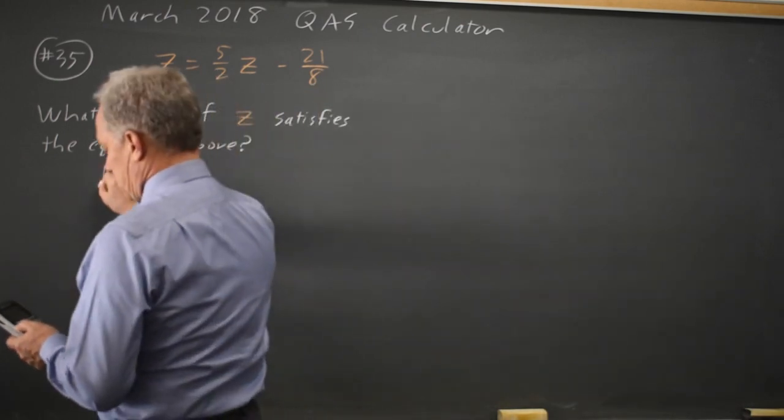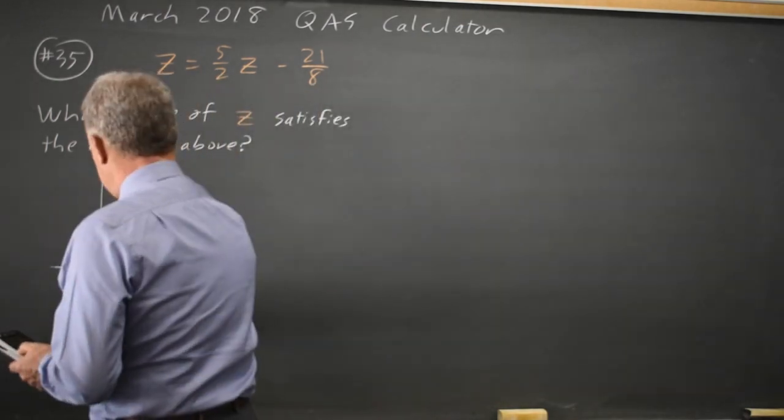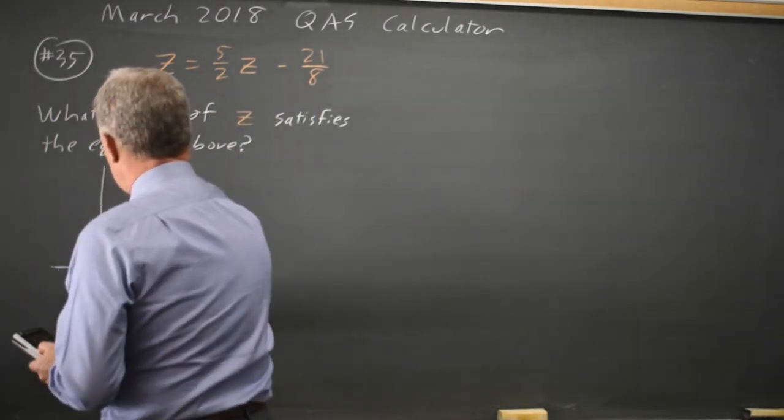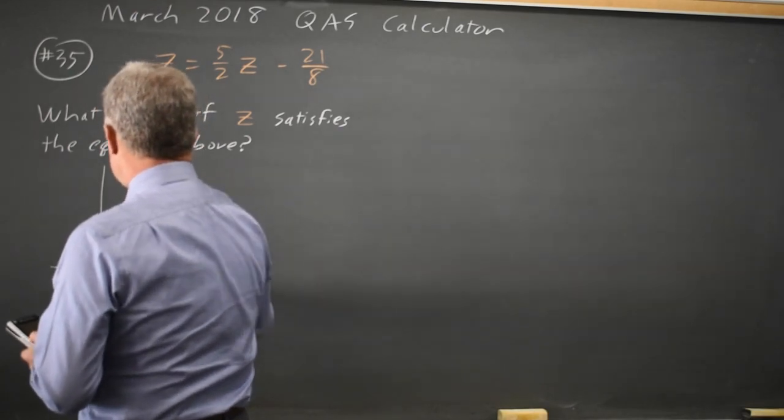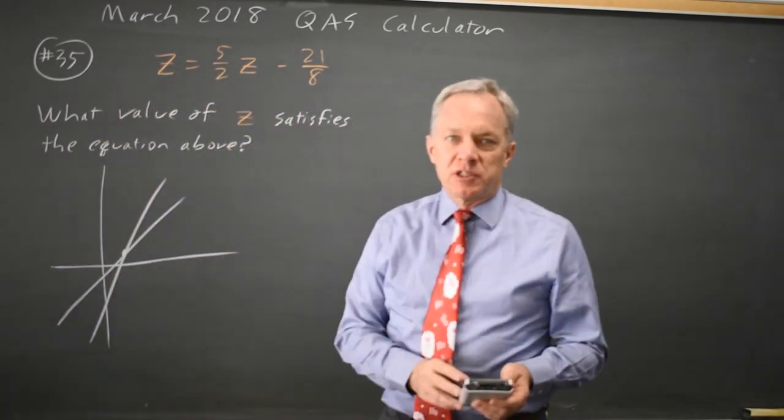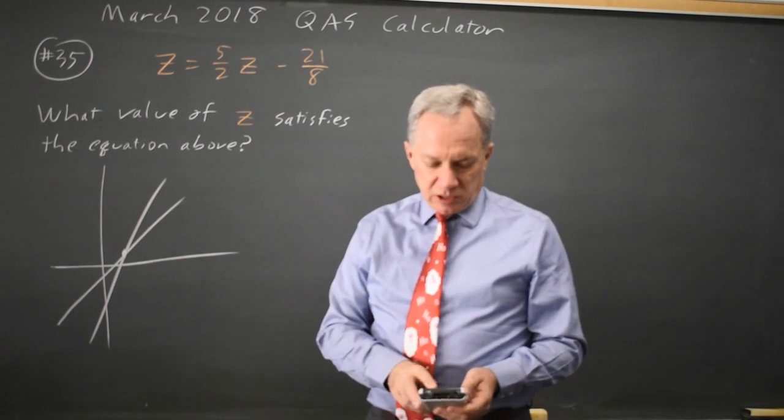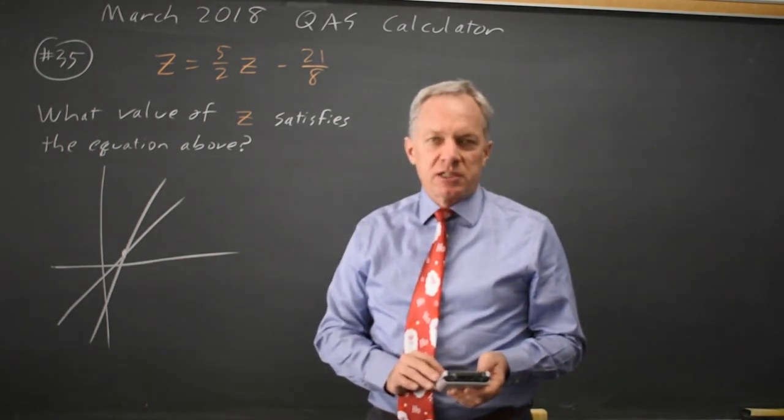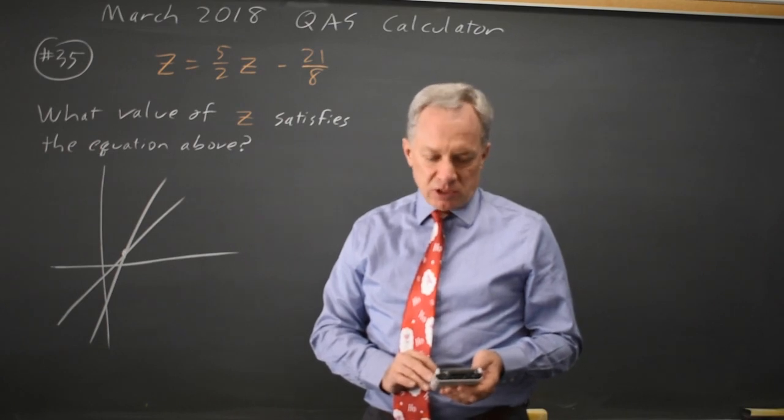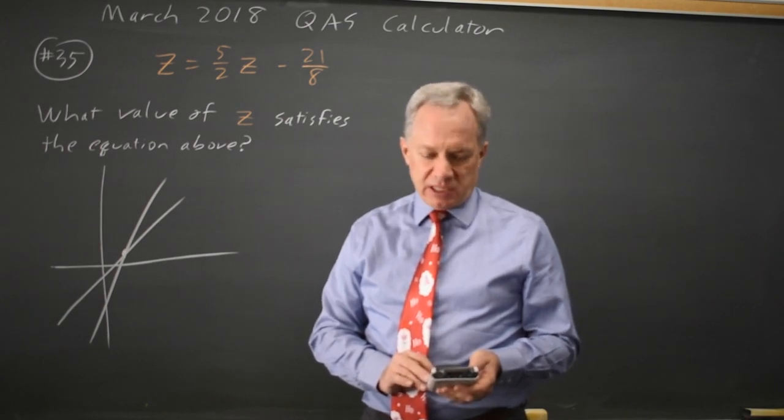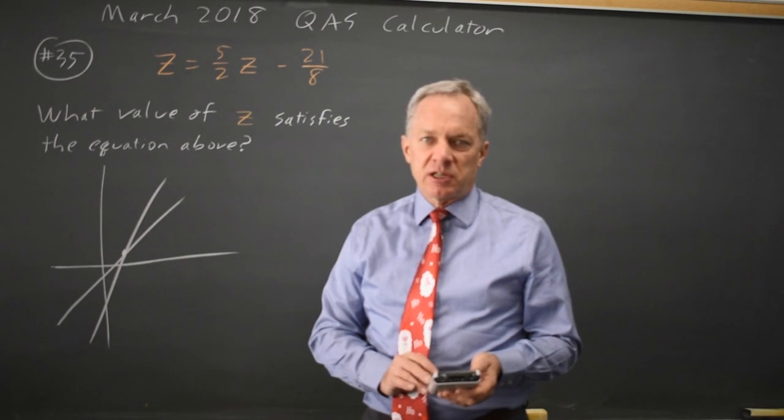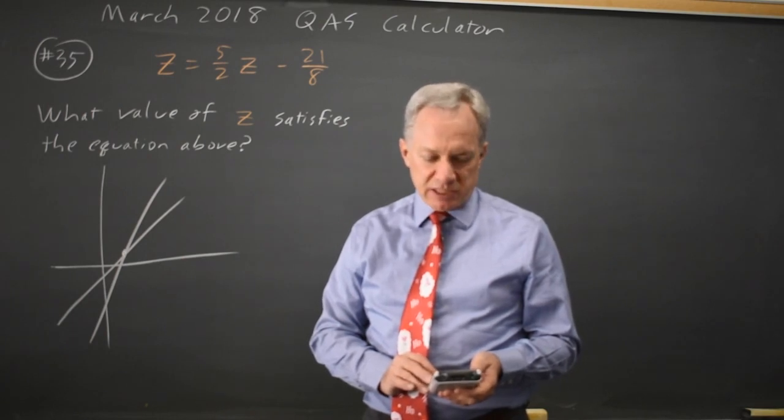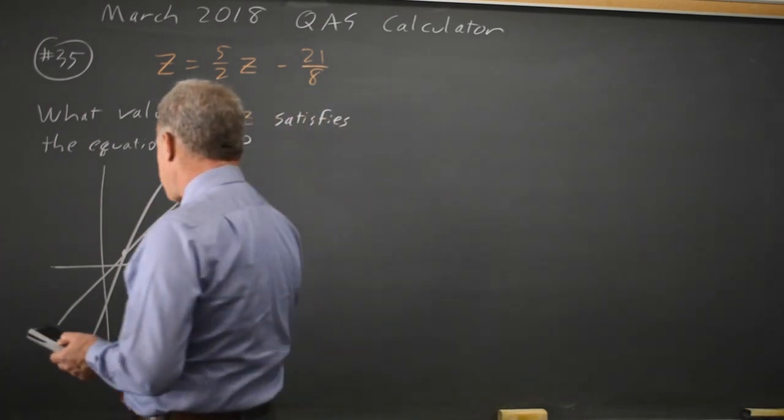My graph looks like this. The x coordinate at the point of intersection is the solution, and my graphing calculator will find that for me automatically. Second trace on the TI-83 or 84, option 5 is intersect. Hit enter three times. You don't have to use your cursor to move near the point of intersection. x equals 1.75.